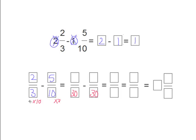If we multiply on the bottom we need to multiply on the top. So 2 times 10 is 20 and 5 times 3 is 15. We keep the 30 the same since it is our common denominator. So we just need to subtract 20 minus 15, which equals 5. So now we have 5 over 30.